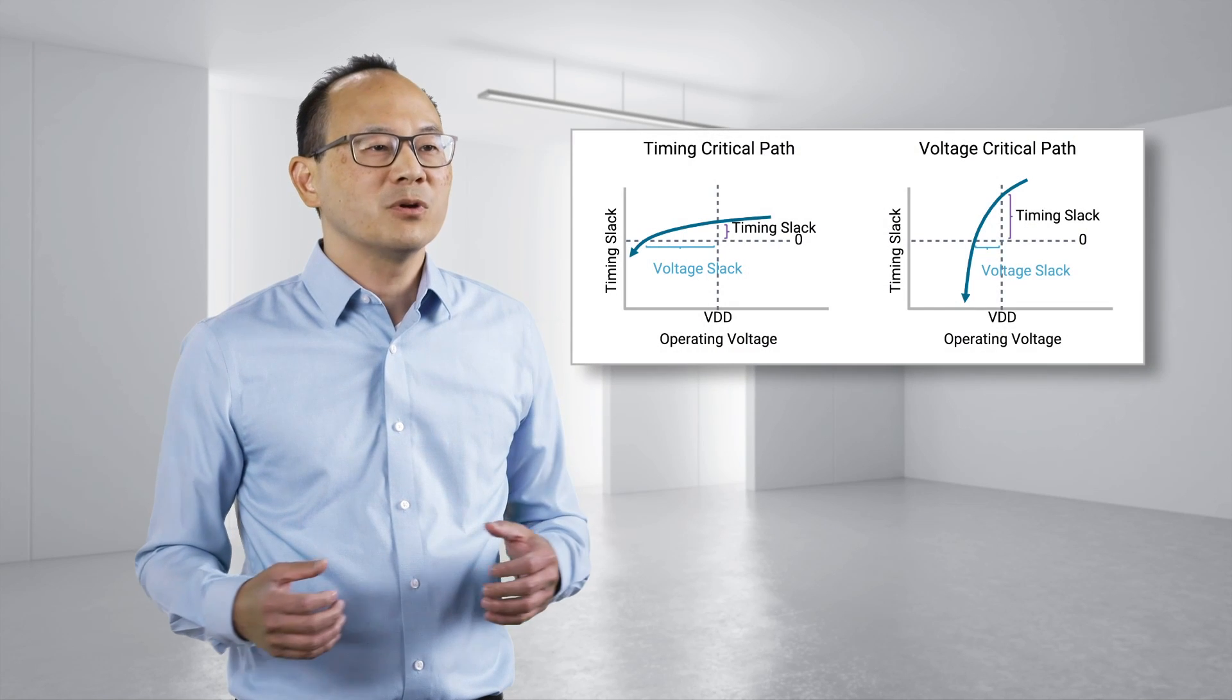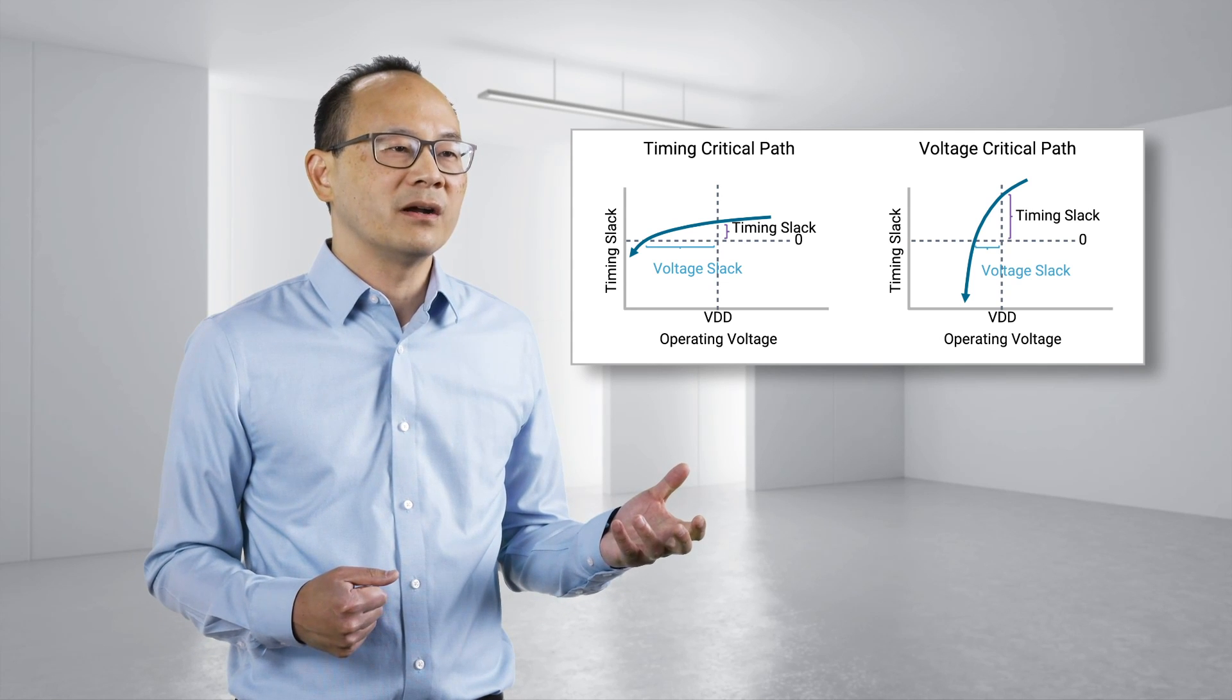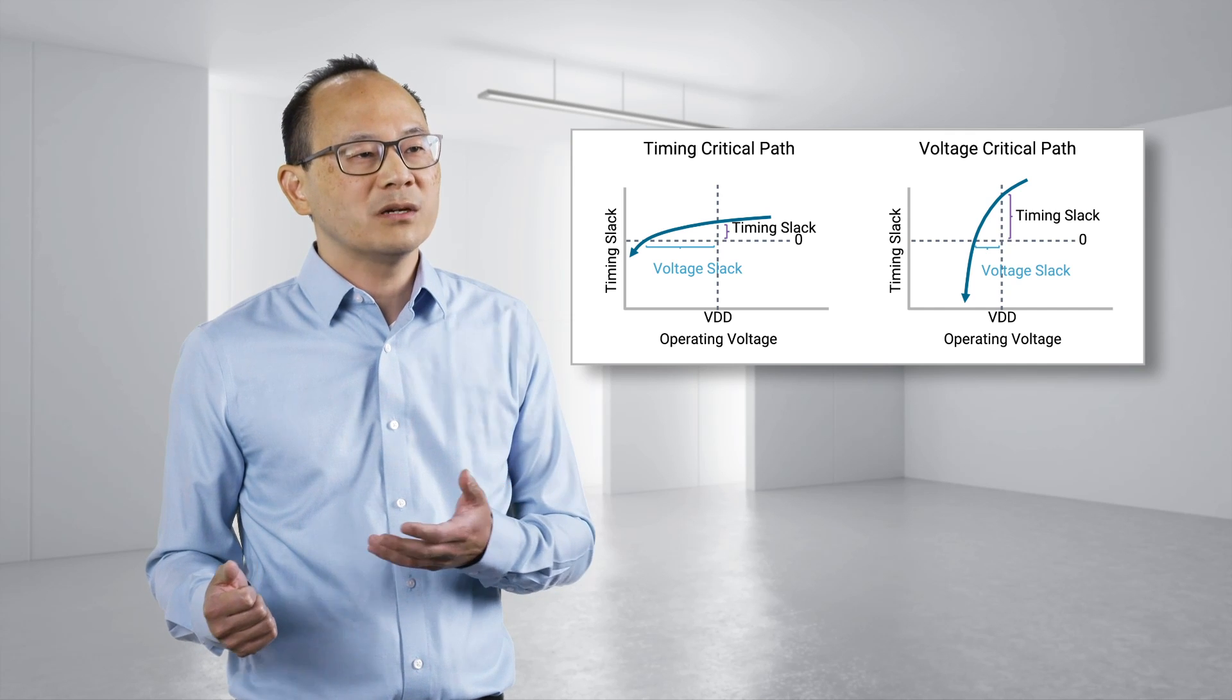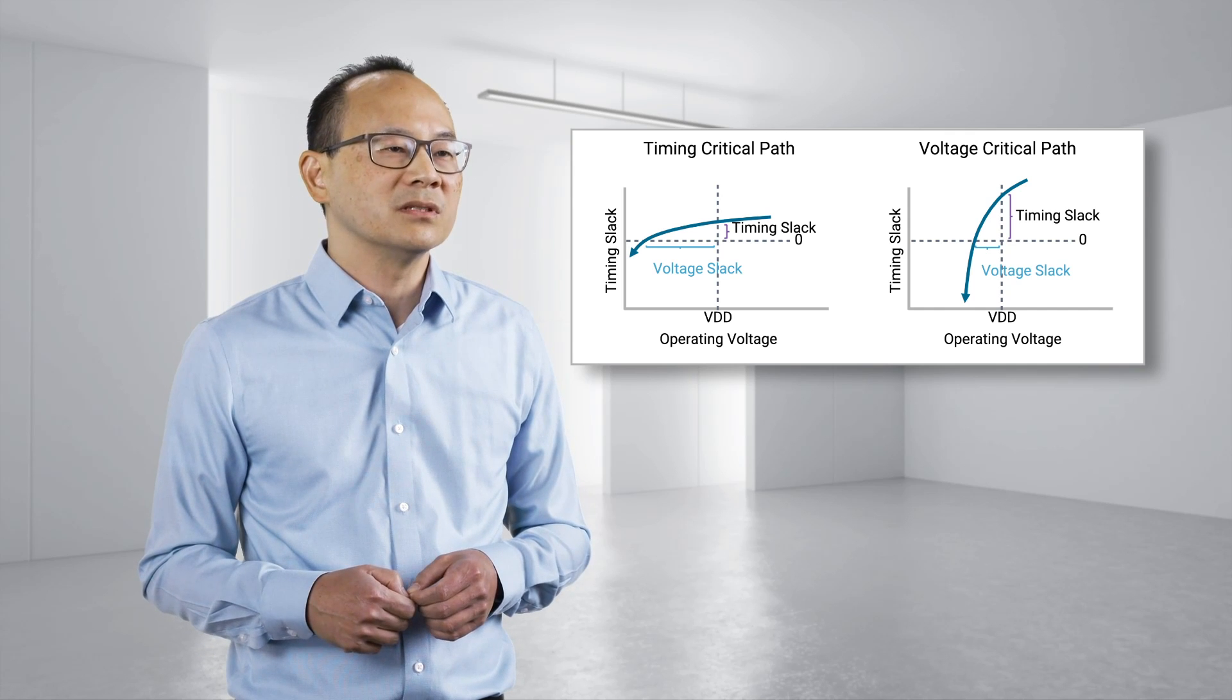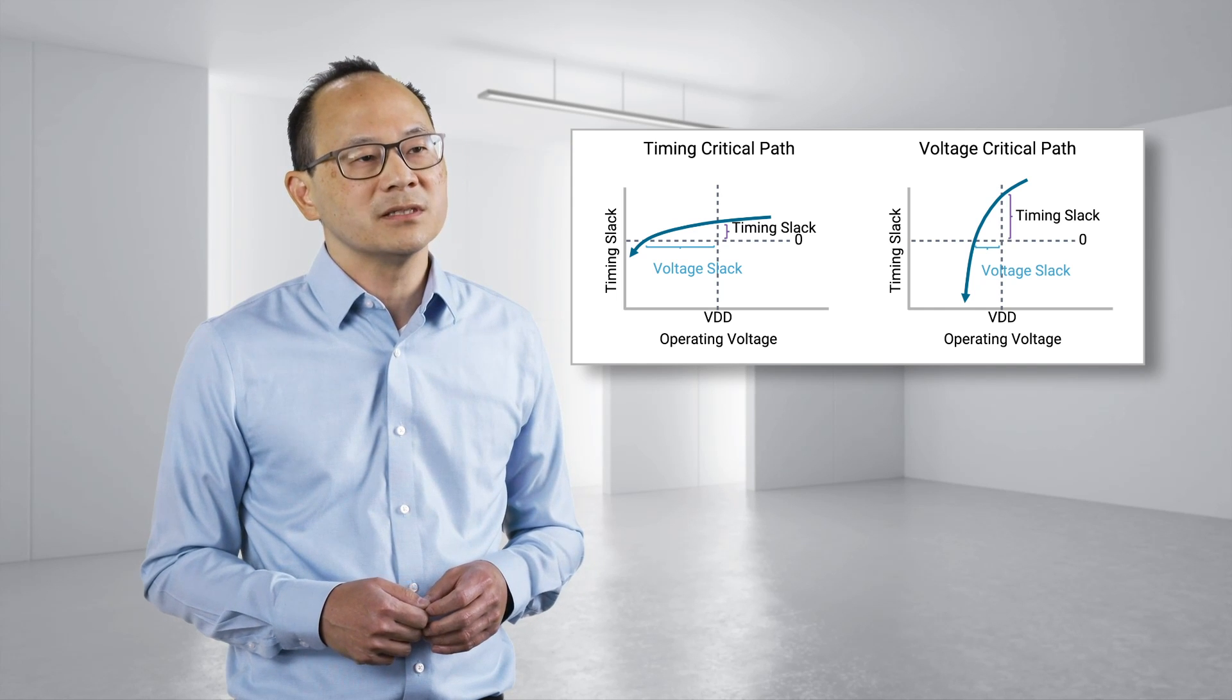Prime Shield's voltage slack analysis is introduced to address this challenge. Timing critical paths typically employ the strongest driving cells that are usually less sensitive to voltage variation, but less critical timing paths may employ weaker driving cells that are more sensitive to voltage and fail earlier when the design experiences a drop in operating voltage.